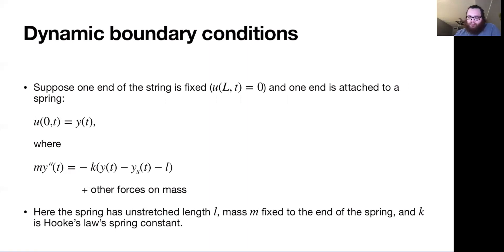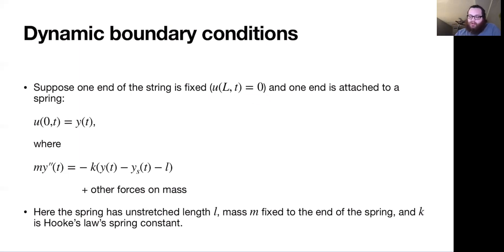So we're going to suppose we have a string. One end of the string is going to be tied down at height zero, and then the other end is going to have this sort of dynamic boundary condition where this dynamic condition satisfies some sort of spring behavior.